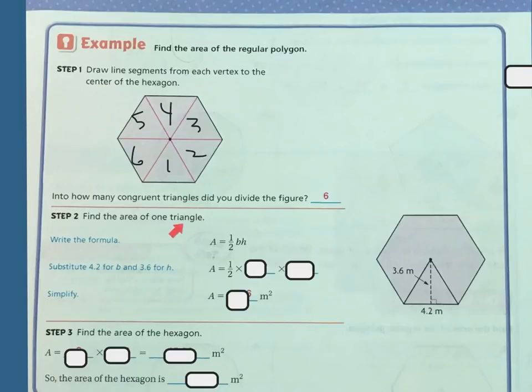So find the area of one triangle. We're going to write the formula. Area equals half times base times height, or again, you could say base times height divided by two. So substitute 4.2 for the base and 3.6 for the height. So my base is going to be 4.2 and my height is going to be 3.6. So I'm going to have 4.2 times 3.6, which is 15.12. And then I have to divide that by two and it's 7.56.